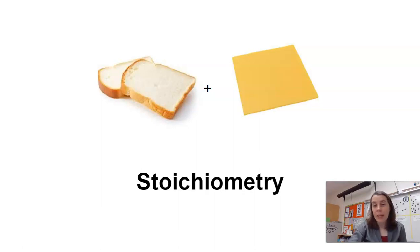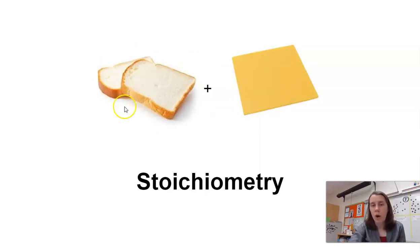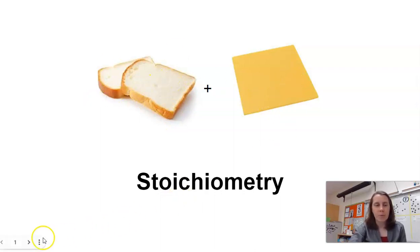Today we're going to talk about stoichiometry, which is just a big word that means we're going to use the ratios of different reactants or products in a reaction. So if we think back to our cheese sandwich, that's just our two-to-one ratio that we have for bread to cheese, for example.